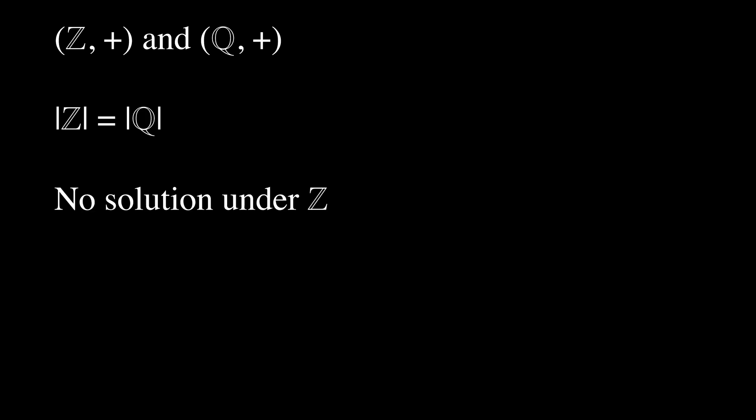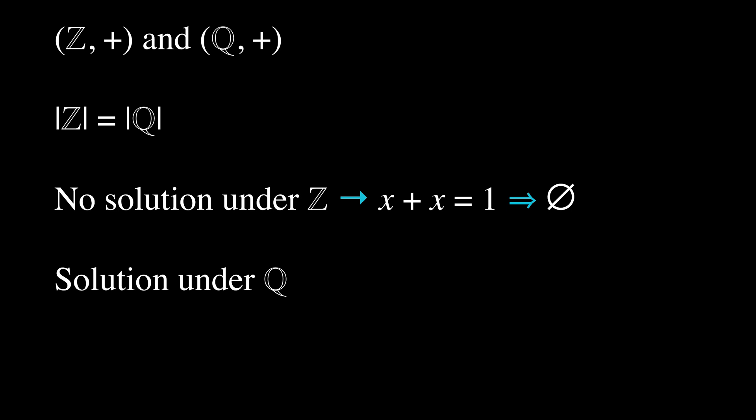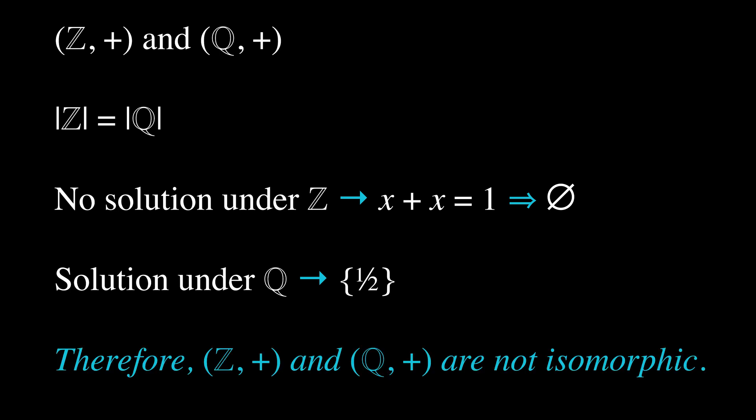Consider the binary structures (ℤ, +) and (ℚ, +). Are they isomorphic? Though ℤ and ℚ share the same cardinality, there is no solution for x + x = 1 under ℤ — that is, the solution set is empty, because there is no integer that when added to itself gives 1. However, if we examine this equation under ℚ, the solution set is simply {1/2}. Therefore, they are structurally different and by the definition of isomorphism, (ℤ, +) and (ℚ, +) are not isomorphic.